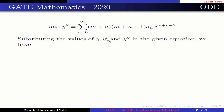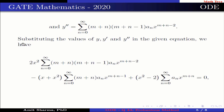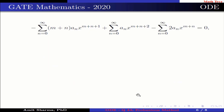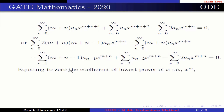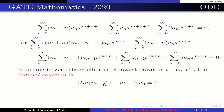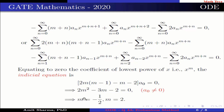Substituting the values of y, y', and y'' in the given equation and simplifying, we equate to zero the coefficient of the lowest power of x, which is x^m. The indicial equation becomes 2m(m−1) − m − 2 = 0, i.e., 2m² − 3m − 2 = 0. Since a₀ ≠ 0, this gives m = −1/2 and m = 2.